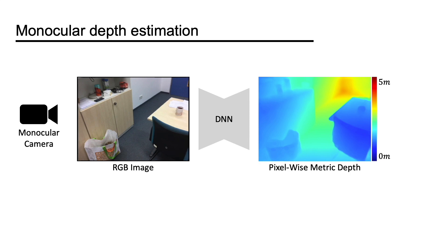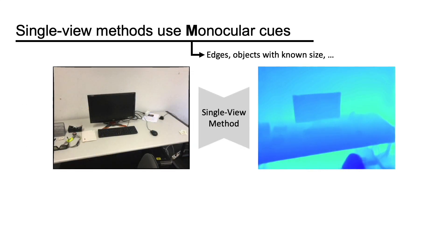Given a monocular input, our goal is to estimate the pixel-wise metric depth. The problem can be solved using single-view methods and multi-view methods. Single-view methods use monocular cues, such as edges and objects with known size.